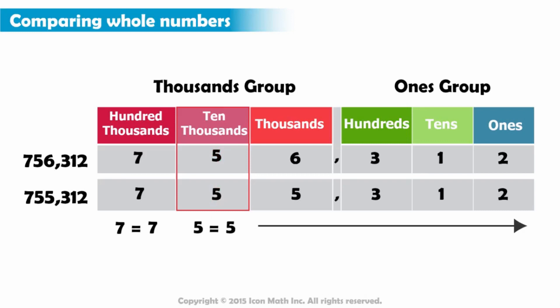So, we move to the next place value. There is a six in the thousands place in the first number, and there is a five in this place in the second number. Both are in the same place, the thousands place. But six represents a greater value than five in the thousands place. Since six is greater than five, we stop the comparison, because we know which number is greater.